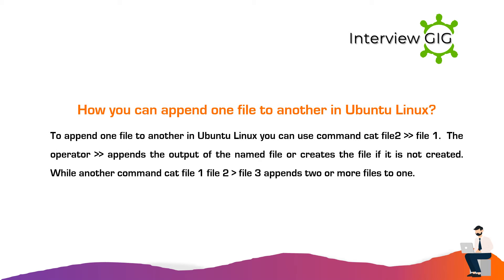How can you append one file to another in Ubuntu Linux? To append one file to another in Ubuntu Linux you can use the command cat file2 >> file1. The >> operator appends the output of the named file or creates the file if it does not exist. Another command, cat file1 file2 file3, appends two or more files into one.